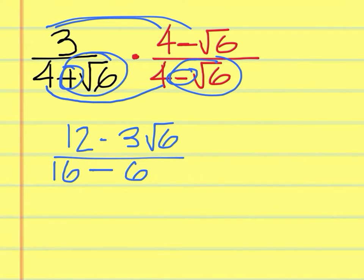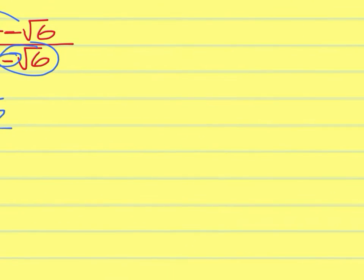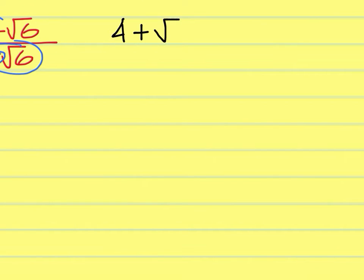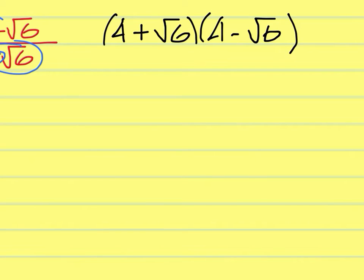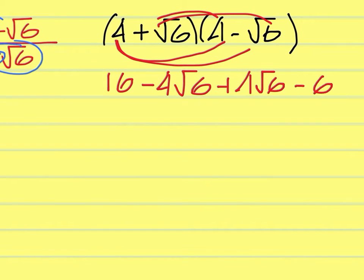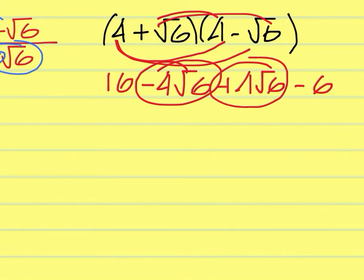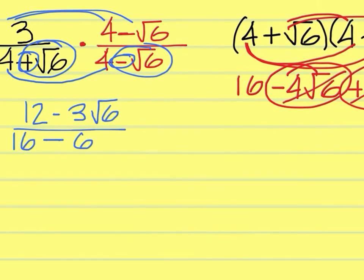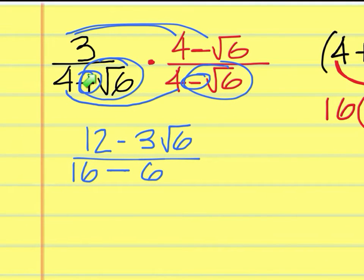There's no need to multiply the rest of it out, and I'll show you why just this first time. This is the whole reason why we're doing this. If you had 4 plus the square root of 6 times 4 minus the square root of 6 and multiplied it all the way out, you would get 16 minus 4 square root of 6, plus 4 square root of 6, and then minus 6. Those middle terms cancel out. So that's exactly why we multiply by the conjugate — the same expression but with a different sign.